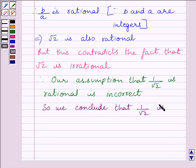We conclude that 1 upon root 2 is irrational. Hence proved, this completes the session.